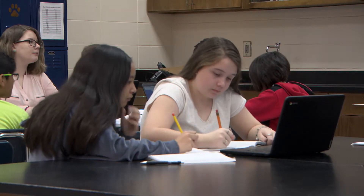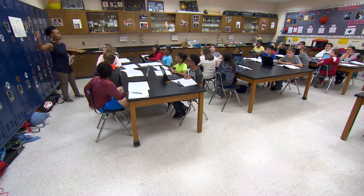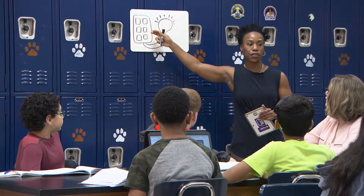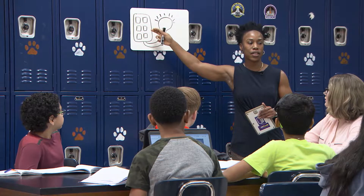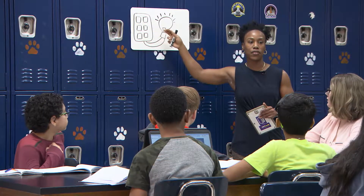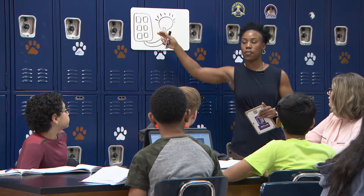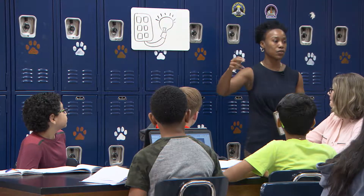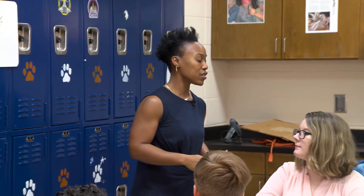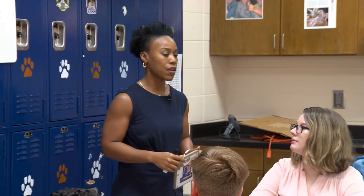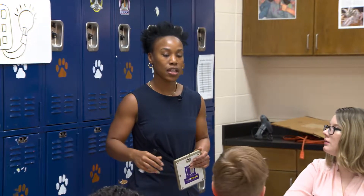A renewable resource can be renewed in a human lifetime. The solar panel works by the sun striking the photovoltaic cell, knocking loose an electron, the electron traveling the circuit, and then returning to where it started. Students are going to draw a graphic model of what a solar panel looks like in their engineering book.